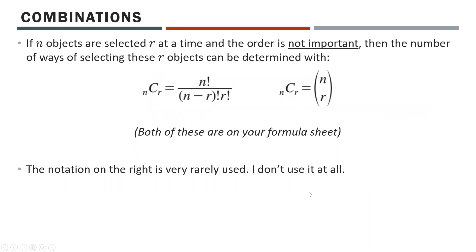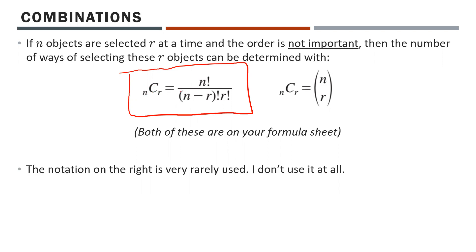Combinations have their own formula, which is on your formula sheet. If n objects are selected r at a time and the order is not important, then the number of ways of selecting these r objects is nCr — n choose r — which equals n factorial divided by (n minus r) factorial times r factorial.